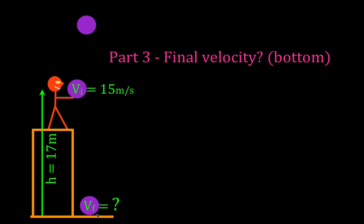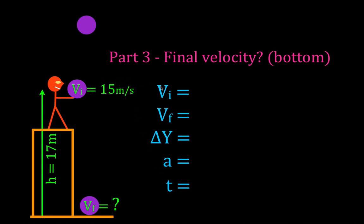What we're going to do next is get out all five of the variables in our kinematic equations: the initial velocity, the final velocity, the change in height, the acceleration, and the time. We'll fill in what we know and what we're looking for. The initial velocity is 15 meters per second. We don't know the final velocity — that's what we're looking for.